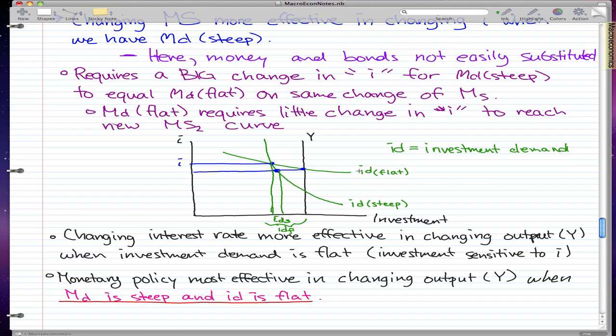When our investment demand is flat, that means our investment is sensitive to I. So we have this flat investment demand curve and we have the steep investment demand curve. Now we're looking at the changes according to the horizontal, not the vertical. You can see that the investment demand actually changes pretty little with the same changes in I.